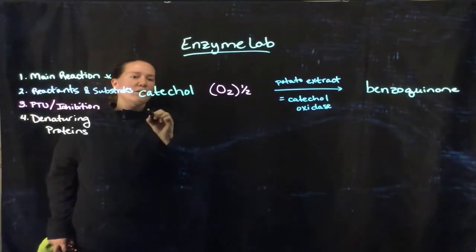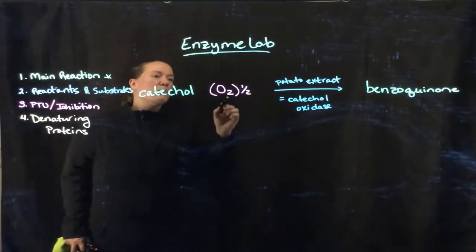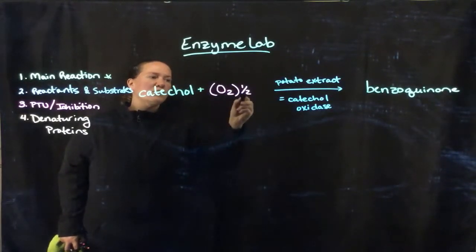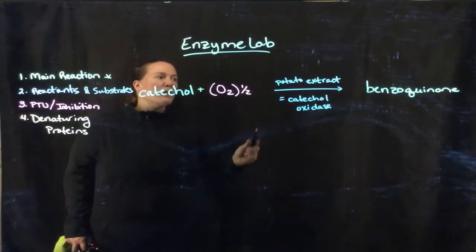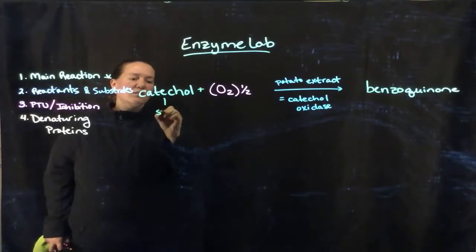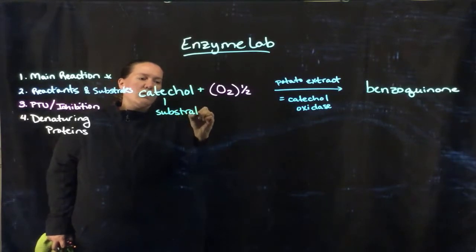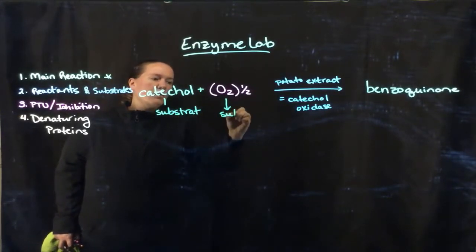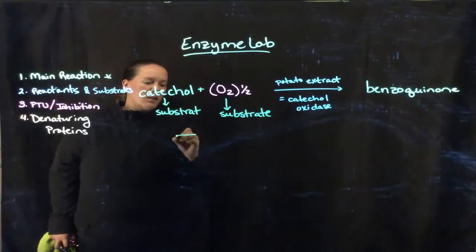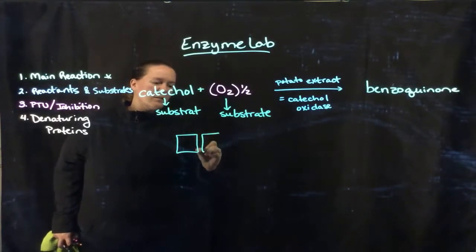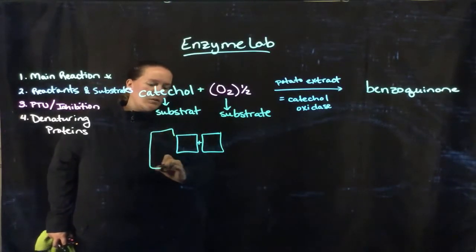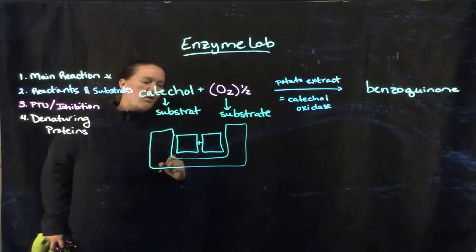Our main reaction is what we're going to start with, and that is catechol plus oxygen. In its gaseous form, oxygen is O2 — we just take one half of the molecule — and these are already out in the atmosphere. We take catechol, which is one of our substrates. So this is a substrate and this is a substrate, and what we're trying to do is add these two substrates together, like two little puzzle pieces.